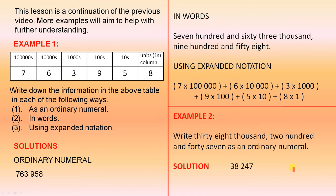Example 2. Write 38,247 as an ordinary numeral. Here we have the words. So 38,000 is that part, 200 is that part, and 47. So we're okay there.